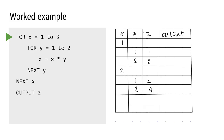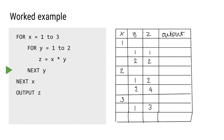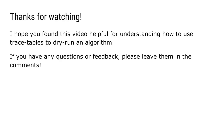The x for loop now moves to x equals 3. We start the y for loop again with y equals 1: z equals 3 times 1 so z is 3. Then y becomes 2 and z is 3 times 2 which is 6. The y for loop has finished and we've also finished the x for loop because x has been 1, 2, and 3. So we go to the output, which is the final value of z — which is 6. Thanks for watching; I hope you found this video helpful for understanding how to use trace tables and dry run an algorithm.